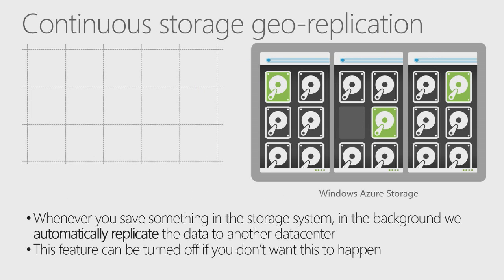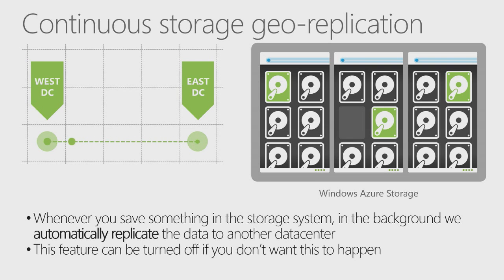Another nice feature of Windows Azure storage is support for continuous geo-replication. Whenever you save something in the storage system, Azure will automatically replicate that data to another data center in the background. Azure guarantees these data centers are several hundred miles apart, so in the case of a natural disaster or complete data center failure, a copy of your data still exists somewhere else. You don't have to configure this — it's automatically enabled by default. You can turn it off if there are policy reasons, but the end result is more robust solutions with greater data integrity, all automatically.